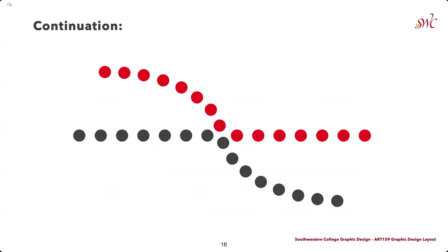Continuation is the law stating that the human eye will follow the smoothest path when viewing lines, regardless of how those lines are actually drawn. In this example, the eye tends to follow the straight line from one end of the figure to the other, and the curved line from top to bottom, even when the lines change color midway through.